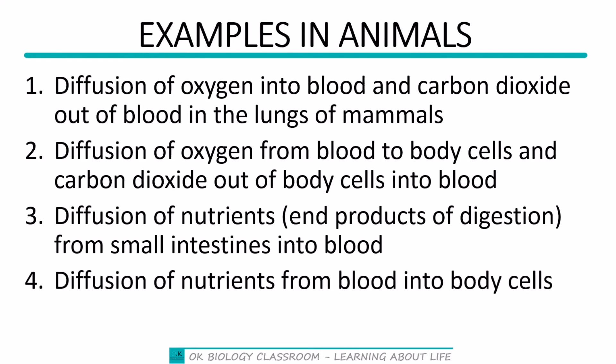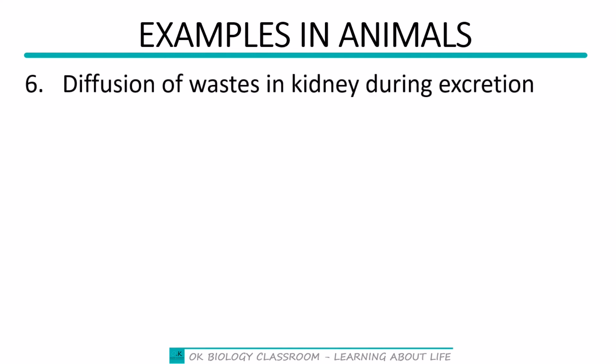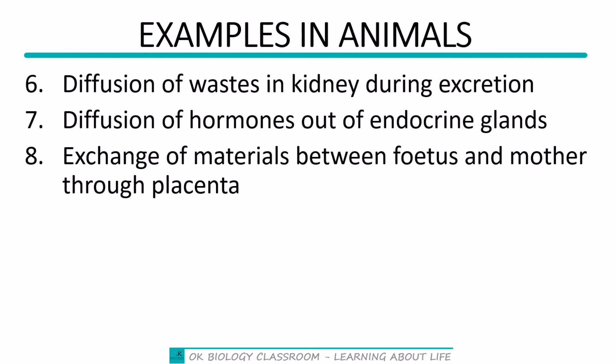Additionally: diffusion of nutrients from blood into body cells, diffusion of waste from body cells into the blood, diffusion of waste in the kidney during excretion, diffusion of hormones out of endocrine glands, and exchange of materials between the fetus and mother through the placenta. Nutrients move from mother to fetus by diffusion, and waste from the fetus moves into the mother's blood — also by diffusion.